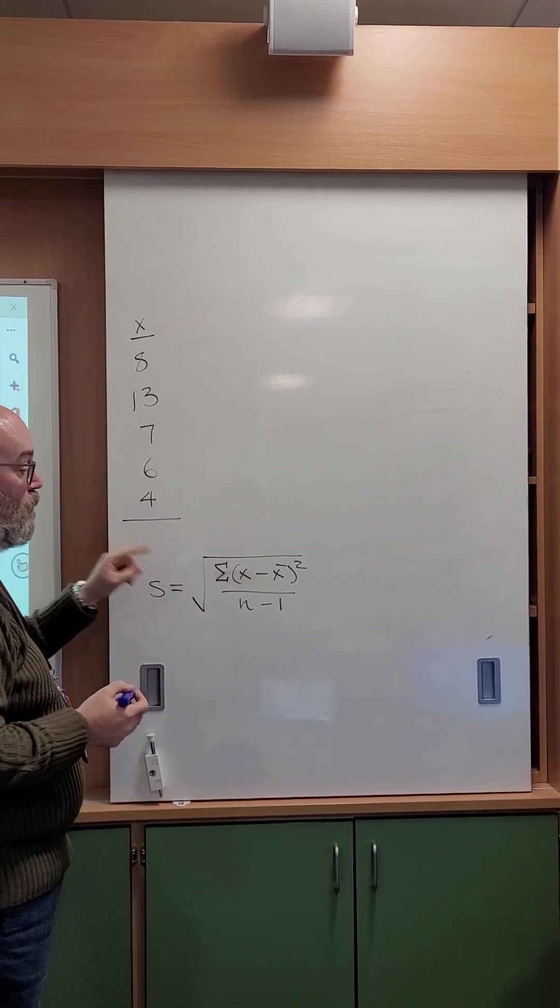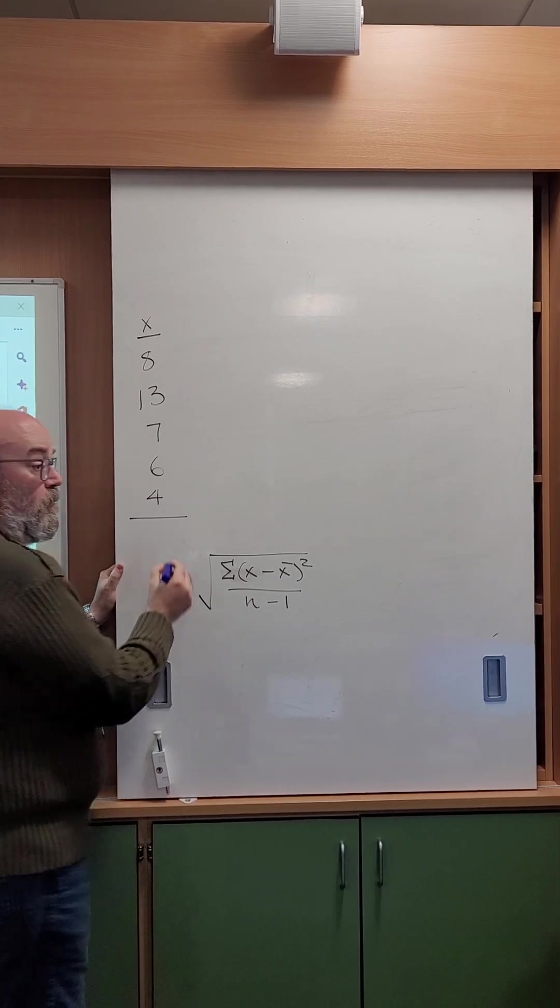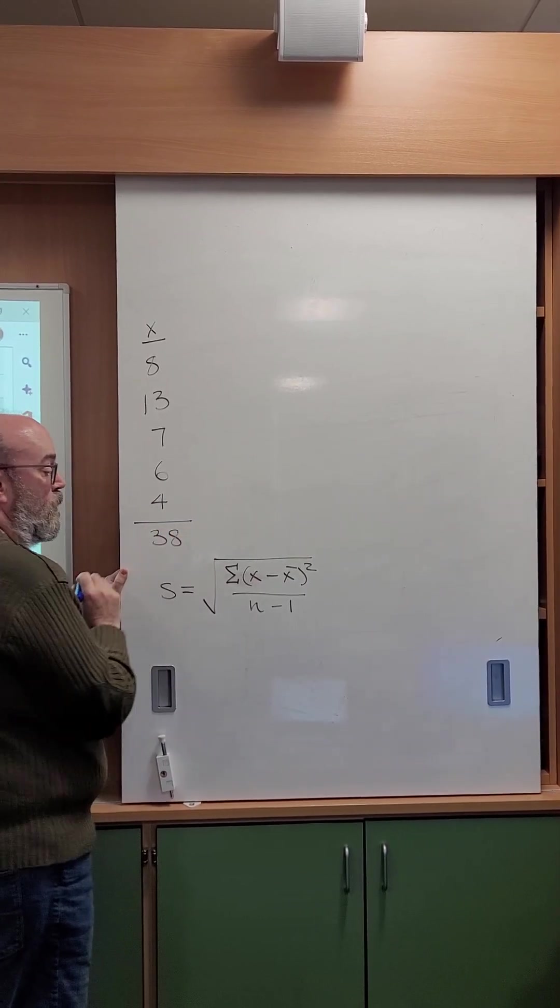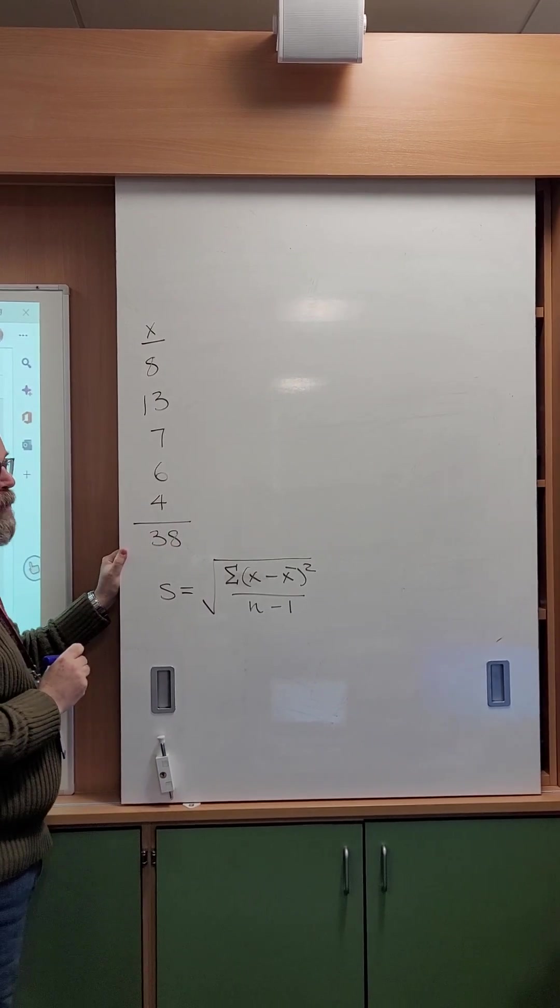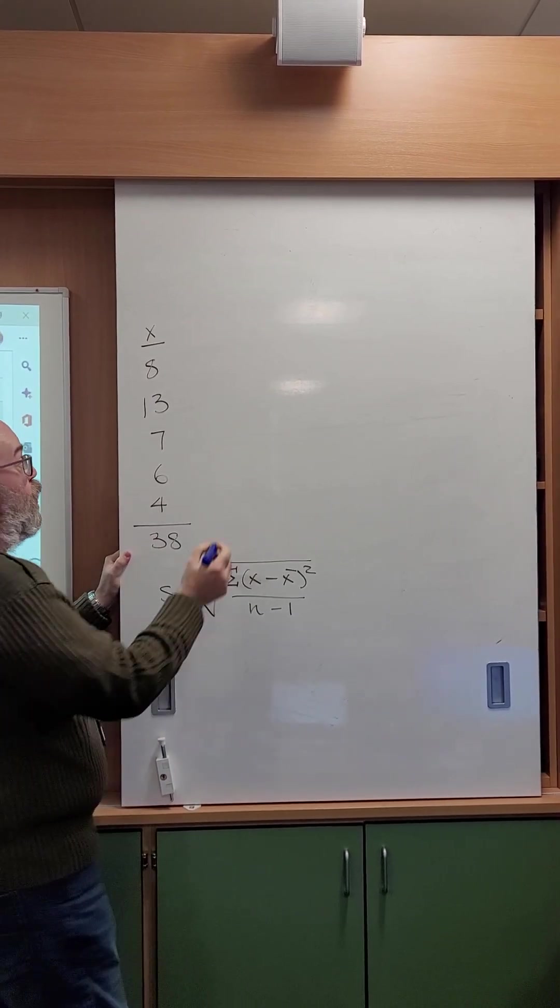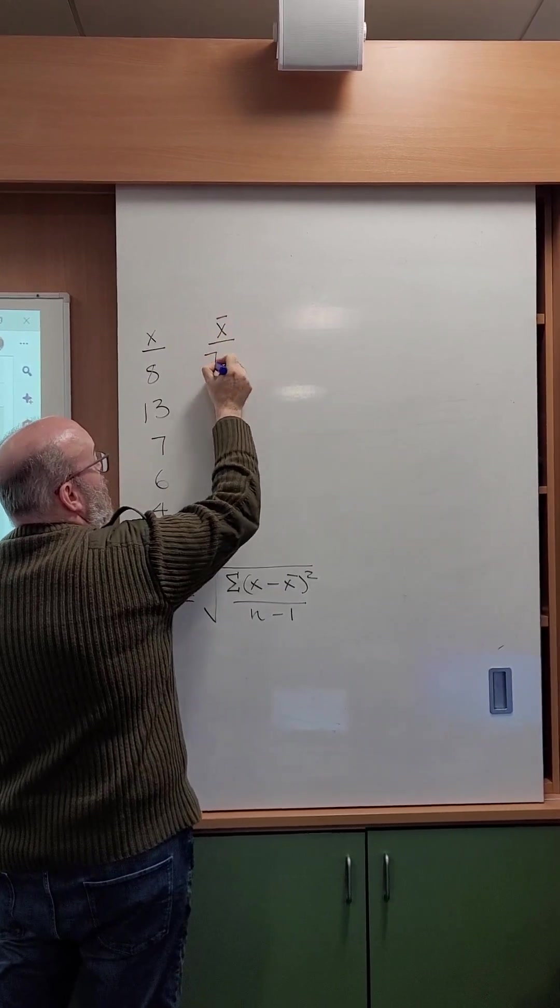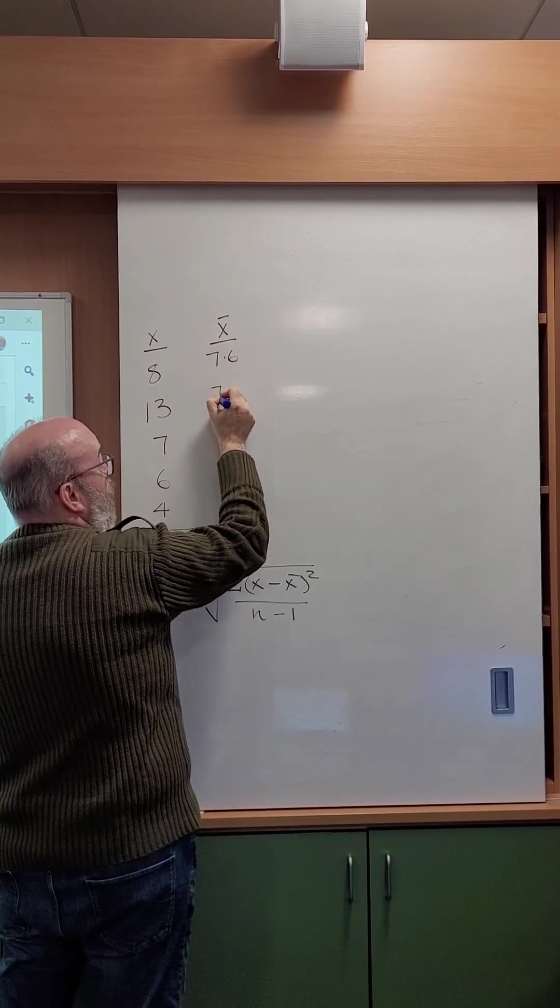So the first thing we want to do is calculate the mean. And if I total all of these up, they'll go to 38. And if I then divide that by 5, I get 7.6. So X bar is 7.6 against all of these values.